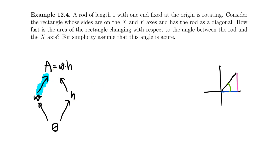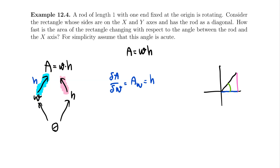The blue arrow represents how fast the area changes with respect to the width. Since area equals width times height, taking the derivative with respect to w gives h. So h is how fast the area changes with respect to width. The pink arrow represents how fast the area changes with respect to height — taking the derivative of A with respect to h gives w.